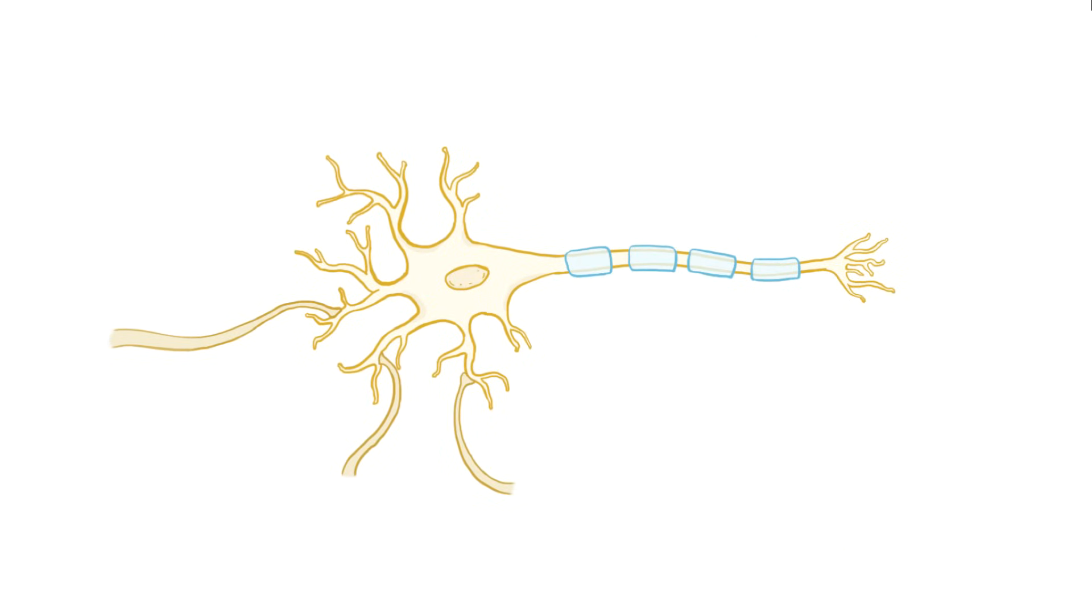Alright, as an extremely quick recap, neuron action potentials happen when dendrites receive enough EPSPs to open voltage-gated sodium channels, which causes rapid depolarization of the neuronal membrane and propagation of an electrical charge from node to node down the length of the axon.